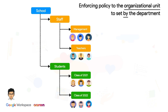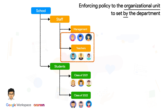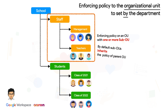In this example, you can clearly see the OU is very similar to your business or school organizational structure. The admin places all the teachers' accounts in the teacher's OU. This way, he can switch on or off the services to all the teachers without affecting the other part of the organization. By default, the child OU inherits the setting from the parent. For example, if the admin switches on or off a service at the staff OU, the management and the teacher's OU will inherit the setting from the staff OU by default.